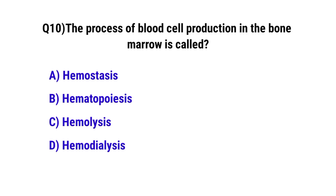Question number 10. The process of blood cell production in the bone marrow is called? The correct option is B: Hematopoiesis.